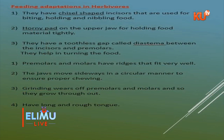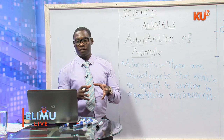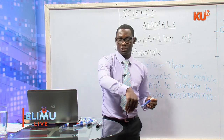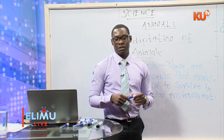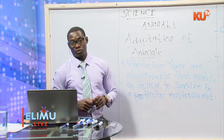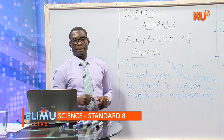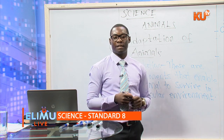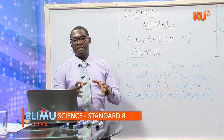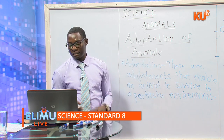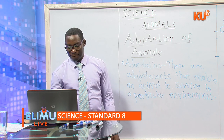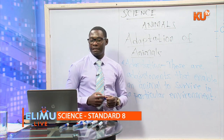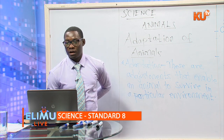The last adaptation of herbivorous animals is that they have a very long and rough tongue. The tongue is long to enable it to hold food — if you watch a cow feeding, you see the tongue going out in a circular motion and grabbing the food. It is rough so that it cannot get hurt while eating vegetable materials like napier grass.